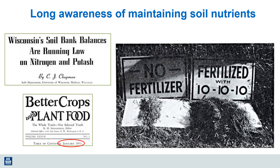We've been addressing the issue of replacing nutrients that are removed during each crop harvest for many years, as illustrated by this article from 1953. We were initially concerned with the macronutrients such as N, P, and K, but now we're increasingly dealing with shortages of micronutrients. Of course, the total amount of nutrient removed is much smaller, but their soil supply and the amount available for plant uptake is becoming an issue of concern in many cropping systems.